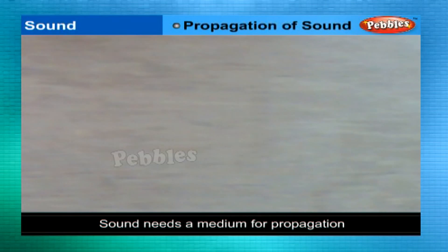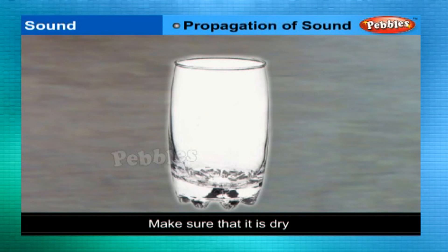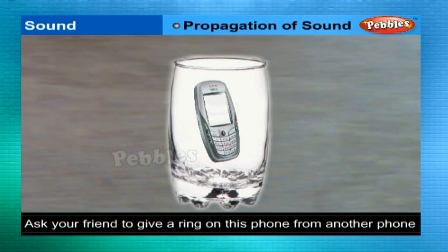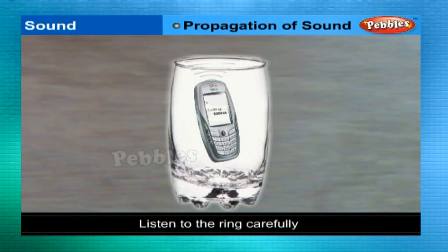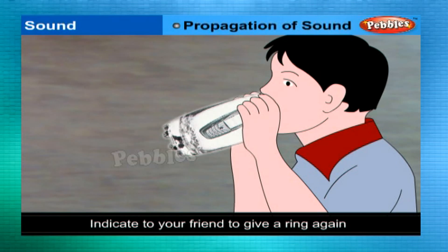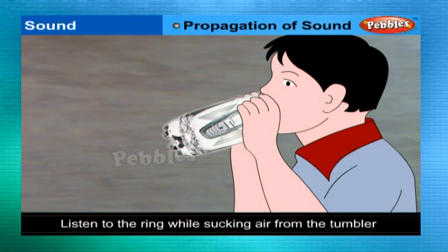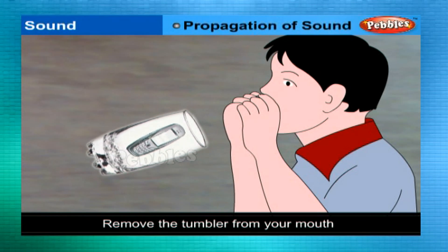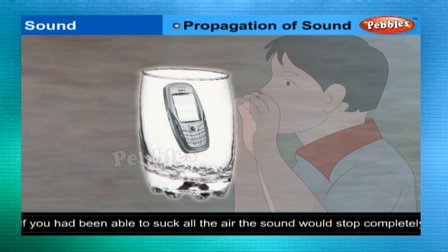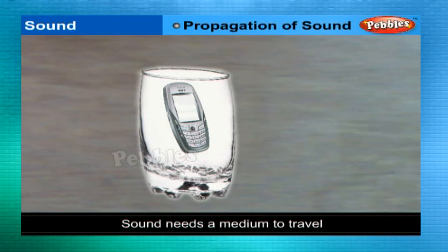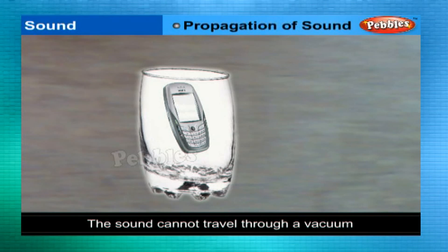Sound needs a medium for propagation. Take a metal glass tumbler and make sure it is dry. Place a cell phone in it and ask a friend to call it from another phone. Listen to the ring carefully. Now surround the rim of the tumbler with your hand, put your mouth on the opening, and suck air from the tumbler while listening to the ring. Does the sound become fainter as you suck air? If you had been able to suck all the air out, the sound would stop completely. Sound needs a medium to travel. When air is completely removed from a vessel, there is a vacuum, and sound cannot travel through a vacuum.